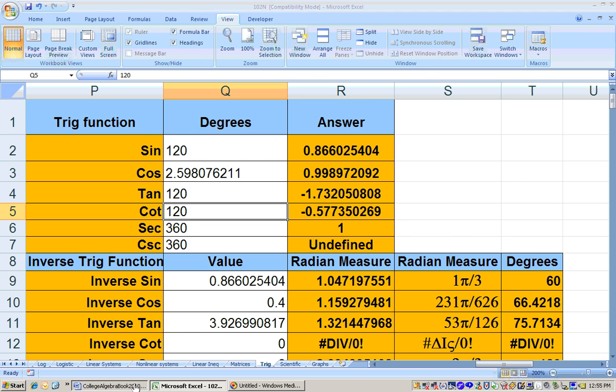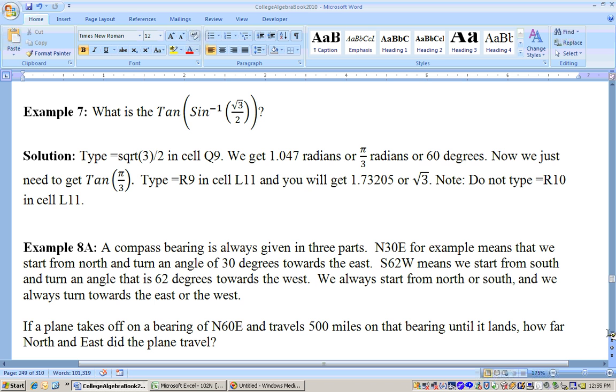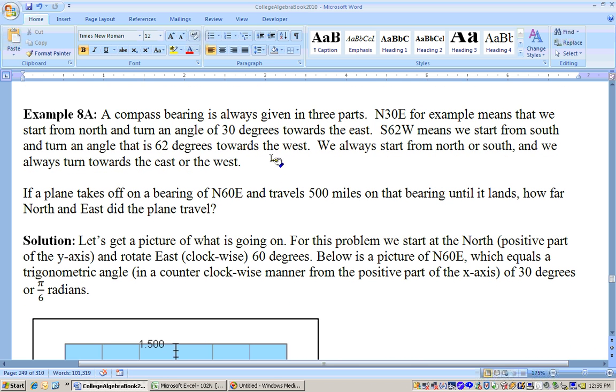Okay, well, let's go ahead and go on to example 8. And example 8 deals with bearing. And a compass bearing is always given in three parts. For example, north 30 east means, for this example, it means that we start from the north and we turn an angle of 30 degrees towards the east.